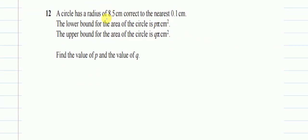A circle has a radius of 8.5 cm, correct to the nearest 0.1 cm, which means to the nearest one decimal place. The lower bound of the area of the circle is p pi cm² and the upper bound is q pi cm². Now to find the upper bound and the lower bound of this number, they have already corrected it to the nearest 1 decimal place. So we will just see what will be the upper bound and the lower bound.